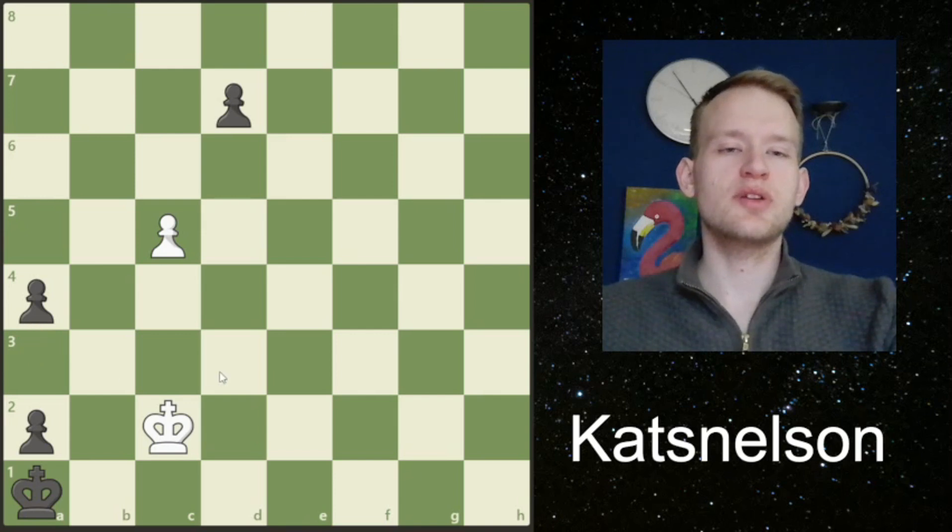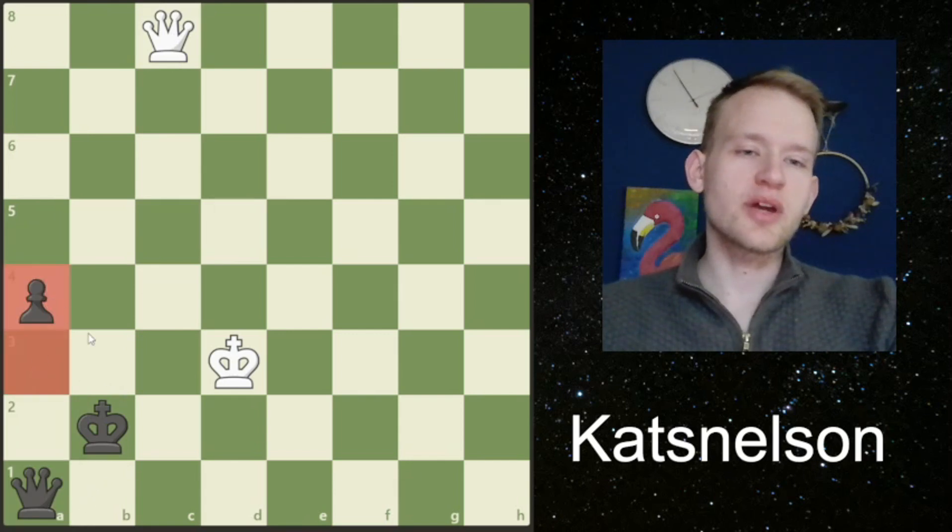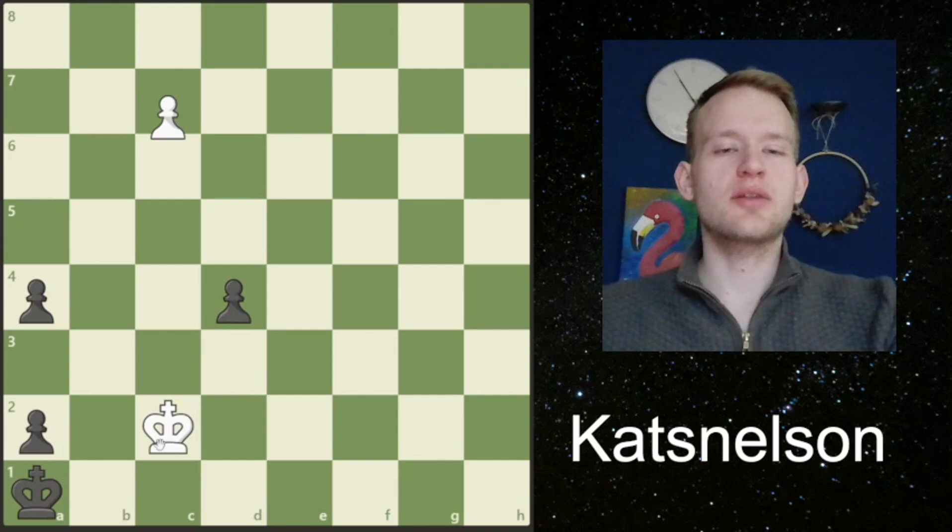Because if we would play king to c2, this would be only a draw. Black is not going to play a3—this would be a transposition to what we've seen. But instead, he plays d5 in this position. If we take, he plays for a stalemating trick. If we advance here, then black is also going to advance. In this case, you can see that the pawn is not on a3, but on a4. So queen to c2 in this position is not checkmate. This is maybe a nice trick that black could try.